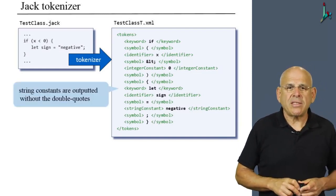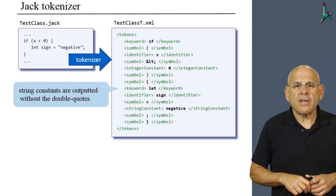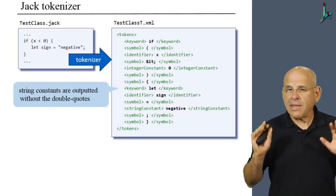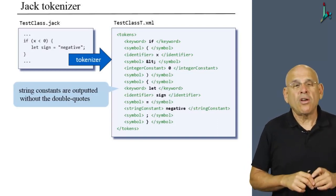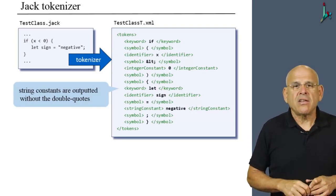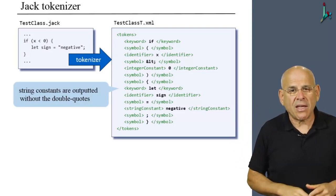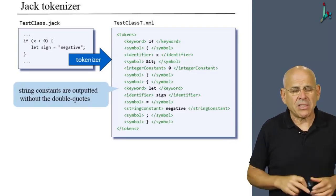What else? You will also notice that the string constants, like the word negative, in the source code appears in the XML without double quotes. That's just fine. That's how we want you to handle it. So your syntax analyzer should not output double quotes. It should output the string constant as is, without double quotes, for technical reasons only.